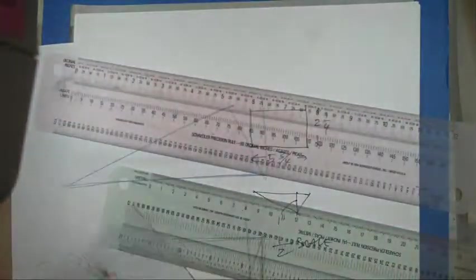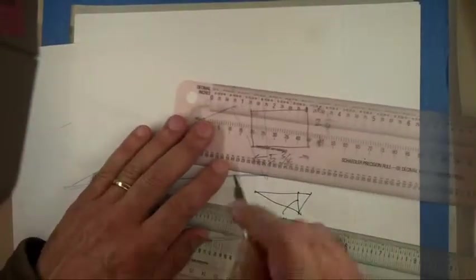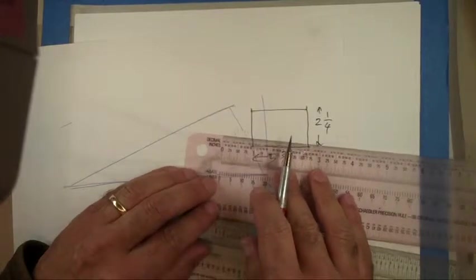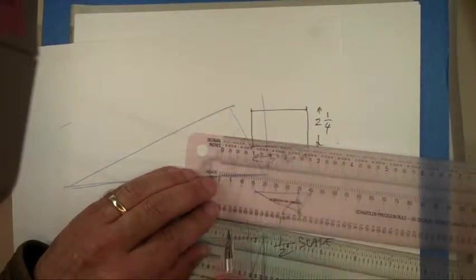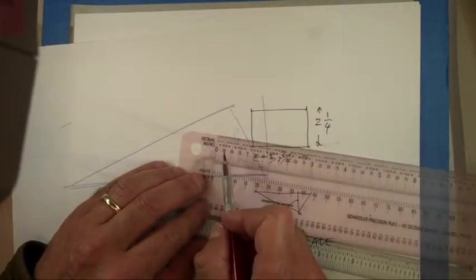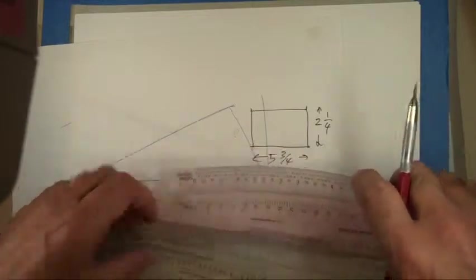One nice feature of one of these rulers also is that it has decimal inches. So that you're always wondering whatever is three-eighths, right? Well, this will give you really nice decimals for the inches.